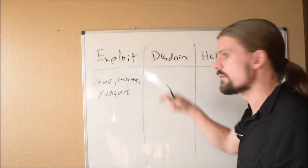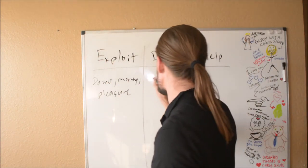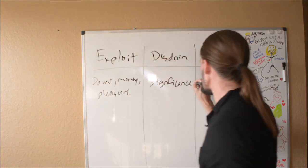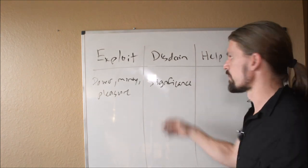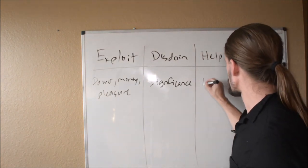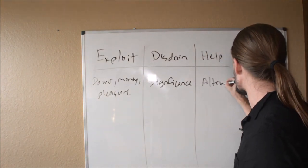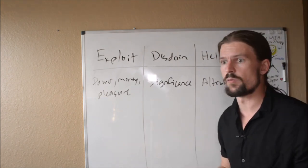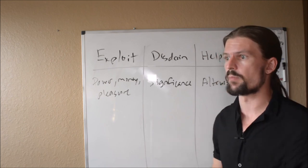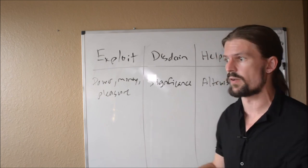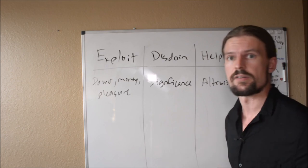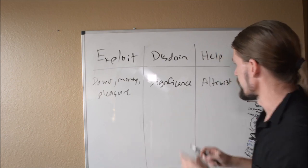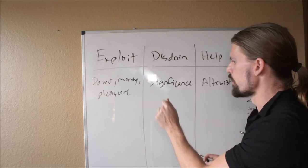That's their ultimate goal. The disdain people, they are out for significance. They ultimately want that feeling of superiority. They want to feel good about themselves. And then the helpers are motivated by altruism. They want to do good in the world. Probably they're religious and they want to spread the love of God to other people. Although not necessarily. That's the motivations of each of those.